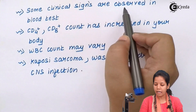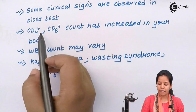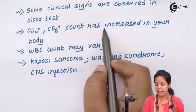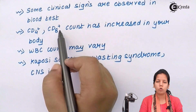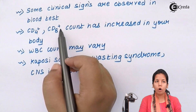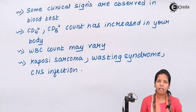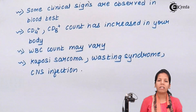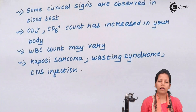Some clinical signs observed in blood tests of an HIV patient include a decrease in their CD4 and CD8 count. CD4 and CD8 are cells of the immune system associated with TC cells — cytotoxic T cells — and T helper cells. Both are associated with CD4 and CD8, and their decrease in the body is a clear indicator of HIV entry.